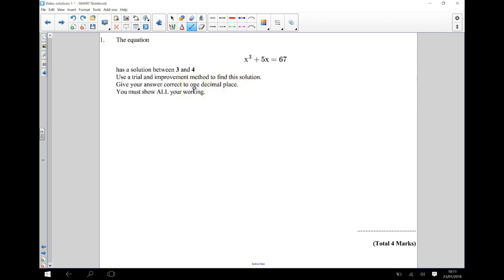So the first thing we need to do to tackle this question is we need to draw ourselves a quick table. So I'm going to draw myself a table like so. And then in my table I'm going to have x, x cubed plus 5x, and then I'm going to have my result.